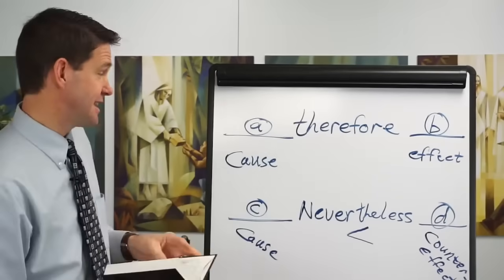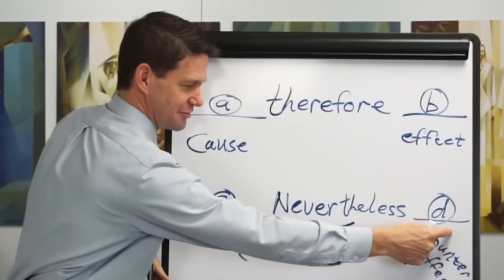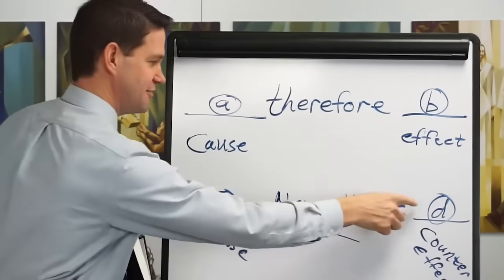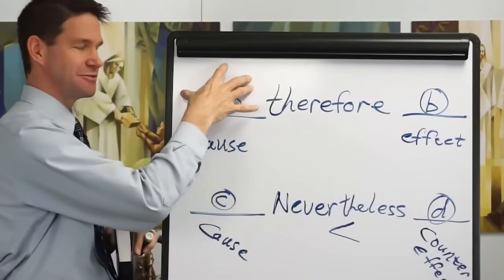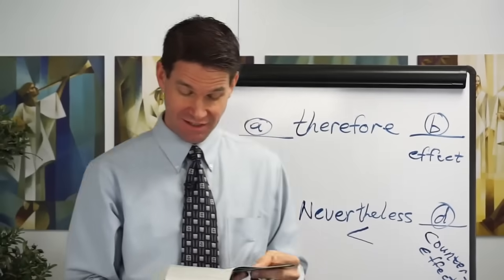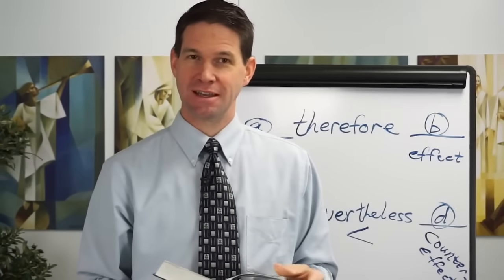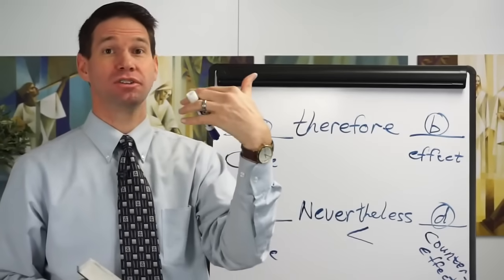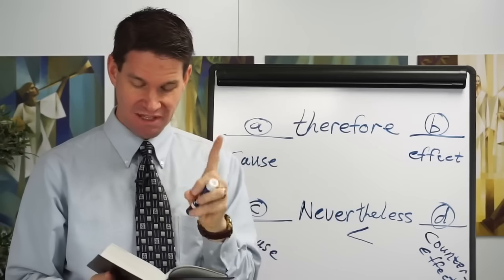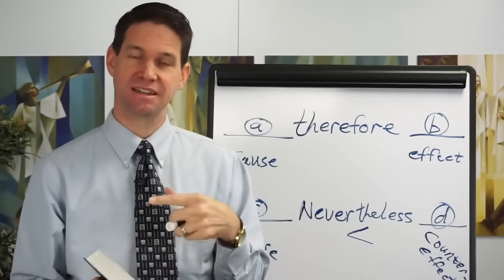Okay, you'll notice that he takes his counter-effect from his second phrase, having been highly favored of the Lord, which then feeds in directly into the final phrase A, which is, having had a great knowledge of the goodness and the mysteries of God. Because I know how good God is, and how kind he's been to me, because of that, I'm going to make a record of my proceedings in my days.